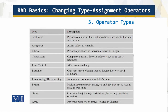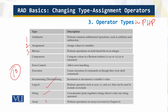What are the operator types? We have about 10 different operator types in PHP. They are arithmetic, assignment, bitwise, compression, comparison, logical, string, and array types — about 10 different types of operators used in PHP.